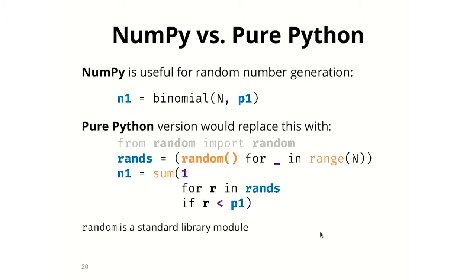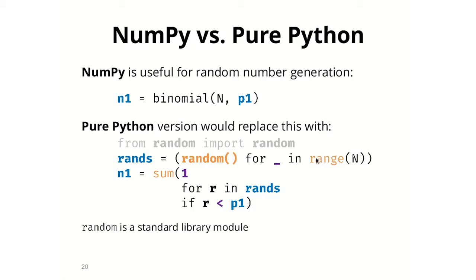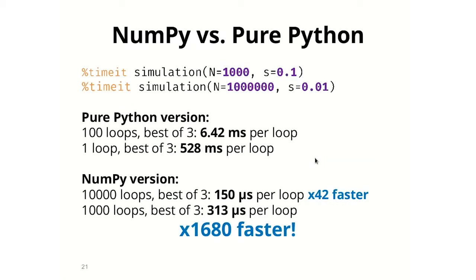What's very nice about scientific Python is that mathematical expressions and Python expressions tend to look very similar, which helps when translating math to code. If we were to do this using pure Python, we'd use the random number generator from the standard library, draw N random numbers, and sum how many were lower than p1 — effectively drawing from a binomial distribution. Comparing the NumPy version to the pure Python version, for a population of roughly 1,000 individuals we get a 42-fold increase in performance, and for a million individuals the improvement is even larger, because NumPy eliminates the Python loop.